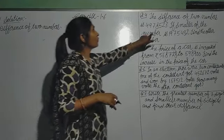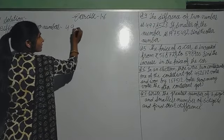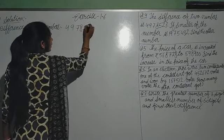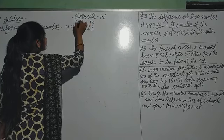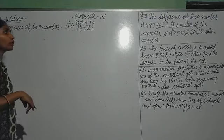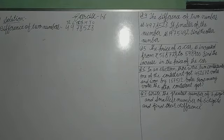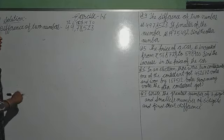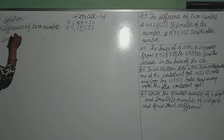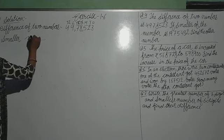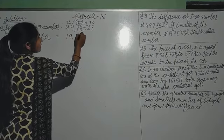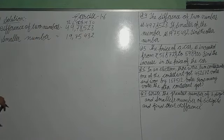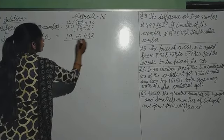What is given? The difference of two numbers is 49,078,523. If smaller of the number — smaller number S-M-A-L-L-E-R — smaller number is 9,075,432.